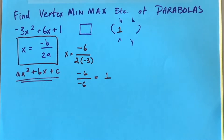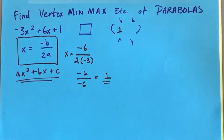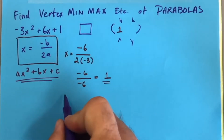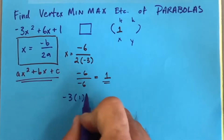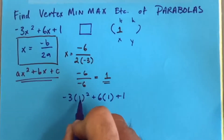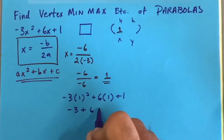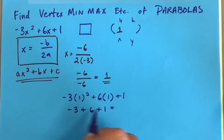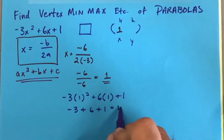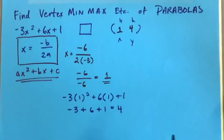Since we know x equals 1, we can plug that back in: negative 3 times 1² plus 6 times 1 plus 1. One squared is 1, times negative 3 is negative 3, plus 6 times 1 is 6, plus 1. Working left to right: negative 3 plus 6 is 3, plus 1 is 4. So our y-coordinate is 4.